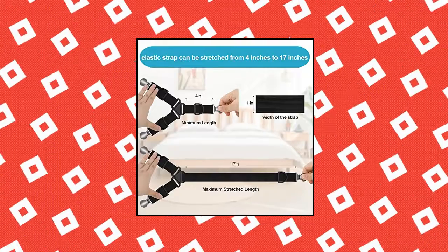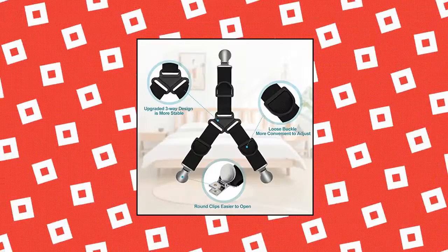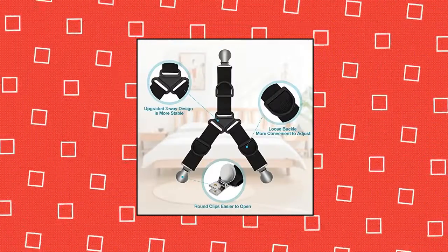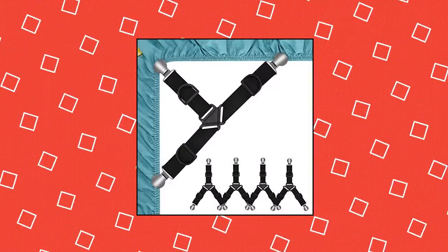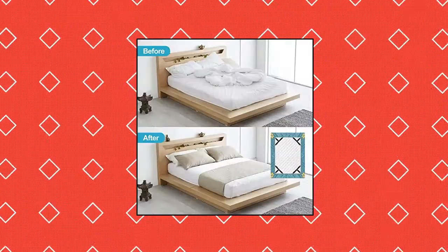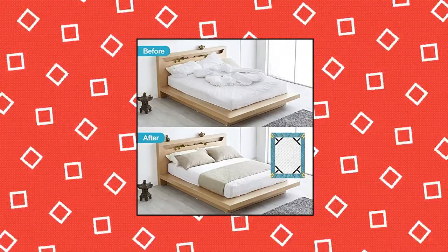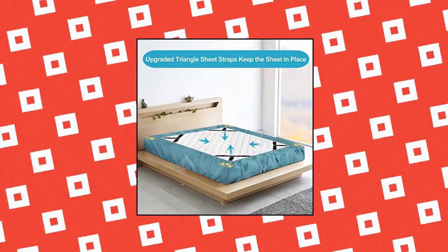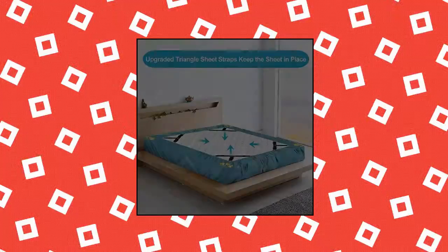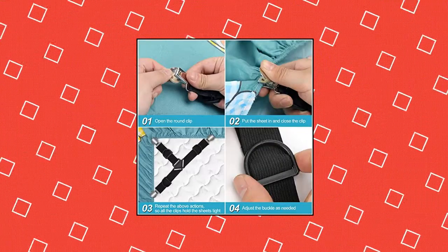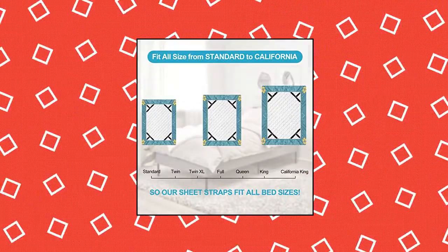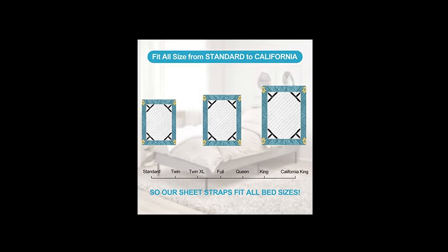SC or Bed Sheet Holder Straps, Upgraded Triangle Design. Adopt upgraded triangle design, they are the most stable to keep your sheets in place all night and keep your bed looking great all the time. Never worry about messy or wrinkled sheets again. Round shape clip, because of the larger area of the round clip, it is easier for your hand to grip and open the clip, so please don't worry about the clips hurting your hands.